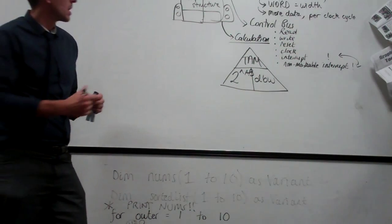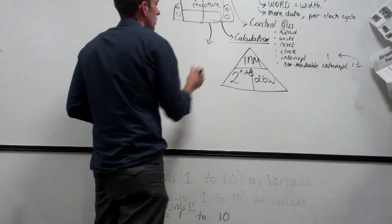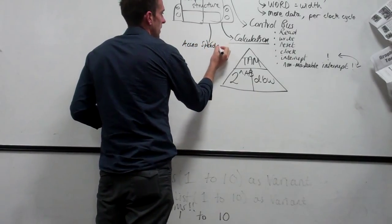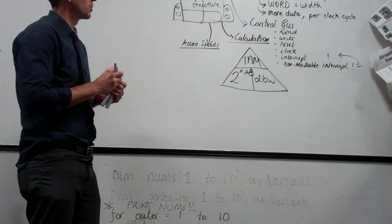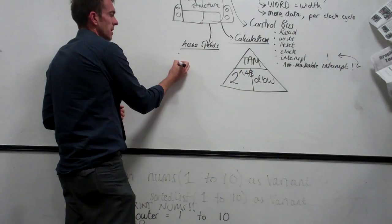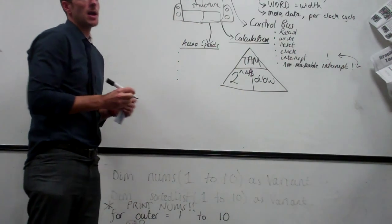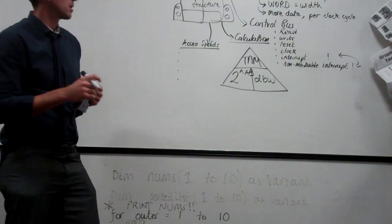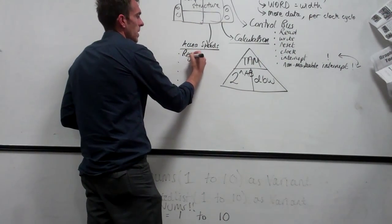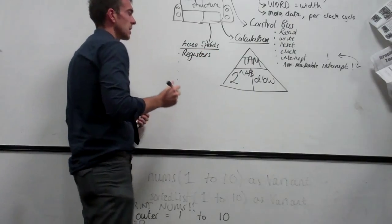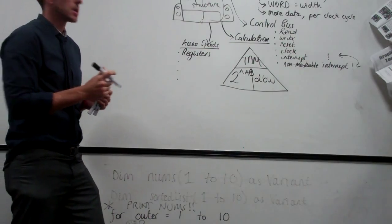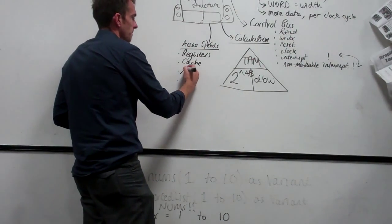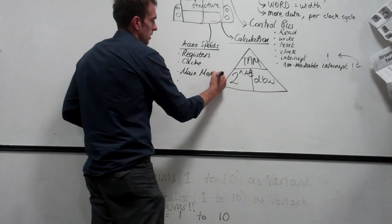After that we spoke about access speeds — one of the main things — and improving the performance of the computer system. What are the four different things in order of access speed? Registers, because they're in the processor, are almost instantaneous. The next fastest is cache. Then main memory. And then backing storage, which is pretty slow.